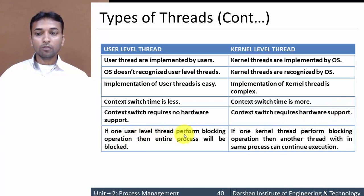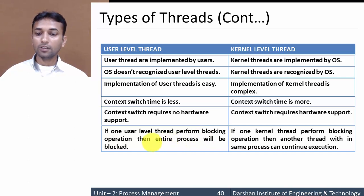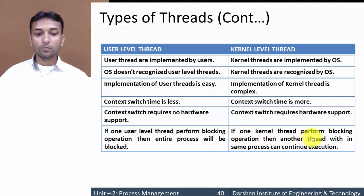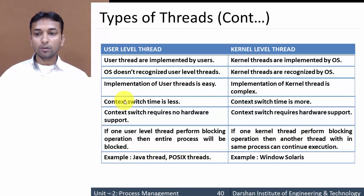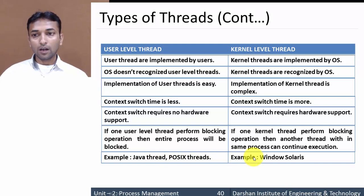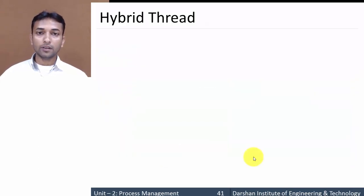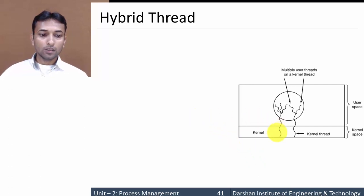If one user level thread performs a blocking operation, the entire process will be blocked because the operating system cannot interfere with these threads. Whereas in the case of kernel level threads, if one thread performs a blocking operation, other threads within the same process can continue execution because the OS can control them. Examples of user level threads are Java threads and POSIX threads, whereas examples of kernel level threads are Windows and Solaris.